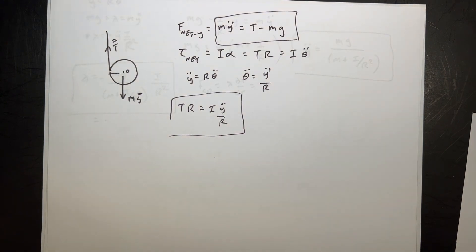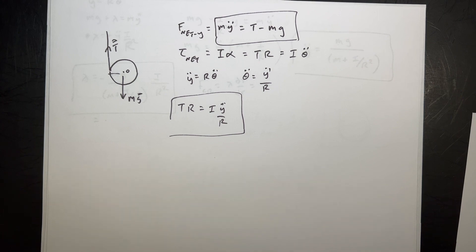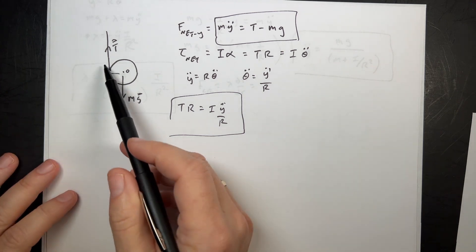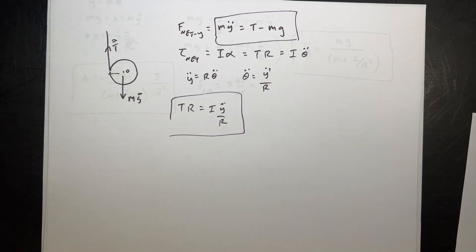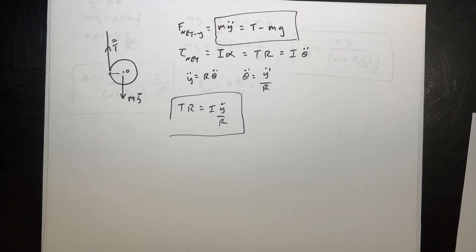We get the same result either way. The Newtonian method looks simpler, but the Lagrange multiplier approach is great practice because we know the answer and can verify it — then apply the same method to more complicated problems. I'm thinking about a variation where the string is heavy and wrapped around multiple times, which might actually be easier with Lagrange multipliers. You could do it — it'd be fun.